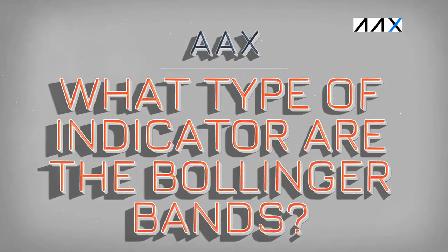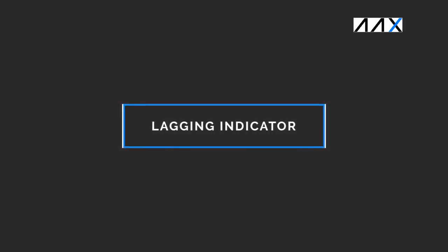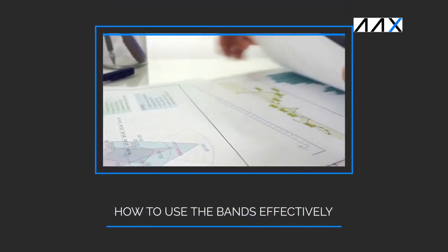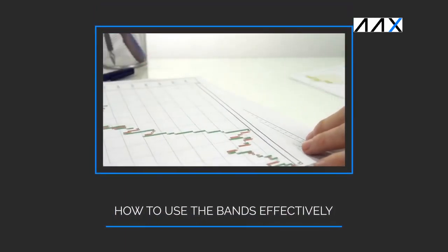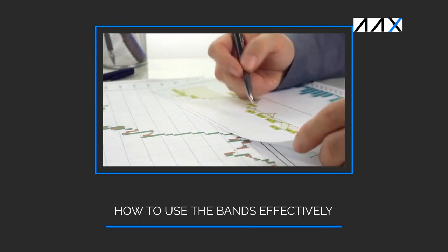What type of indicator are the Bollinger Bands? Bollinger Bands are a lagging indicator. This is due to them being created through using Simple Moving Averages. Now let's see how we can use them effectively.